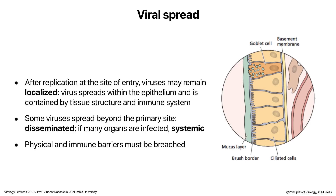Now let's talk about viruses spreading from those primary sites of infection. Many viruses never spread — they remain localized. A rhinovirus in the respiratory epithelium produces virus that spreads from cell to cell but never goes beyond the basement membrane — that's a localized infection. Influenza viruses remain localized and they're quite nasty. But others can spread; if viruses spread beyond the primary site, we say it is disseminated. If it infects many organs, we call it a systemic infection. Viruses have to actively do something to get beyond the basement membrane.